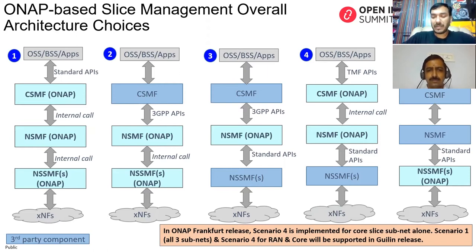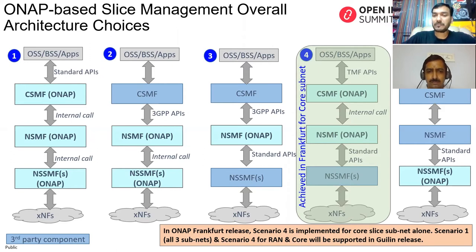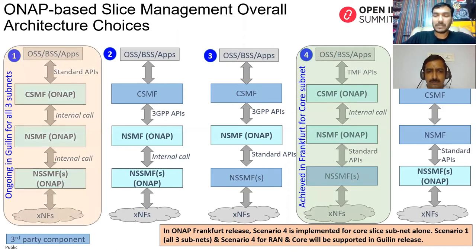We found scenario four to be the closest starting point. For the Frankfurt release, we took the core NSMF as the starting point, implementing CSMF and NSMF entities within ONAP using 3GPP standards. Only the core NSMF was completed as part of Frankfurt.